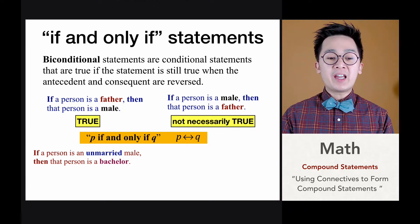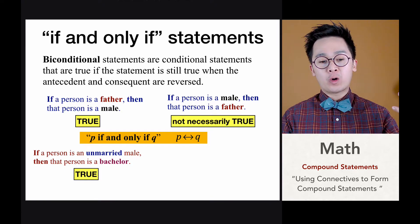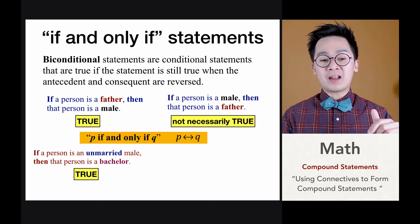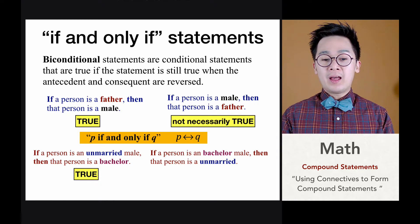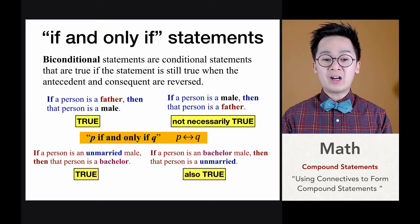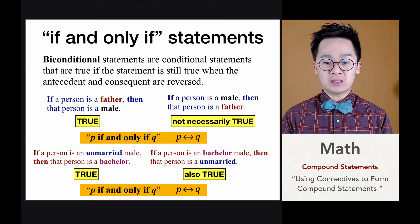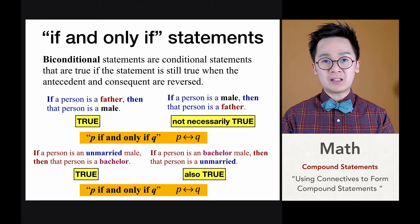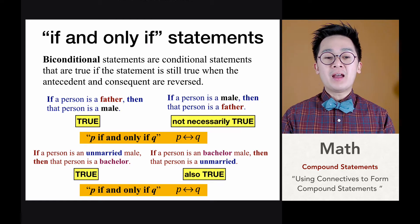Let's look at another example: 'if a person is an unmarried male, then that person is a bachelor' — this is a true definitional statement. When we interchange the antecedent and consequent, it becomes 'if a person is a bachelor, then that person is unmarried,' which also holds true. Since the statement still holds when P and Q are interchanged, we can say P IF AND ONLY IF Q — written as P ↔ Q — is a valid biconditional statement.